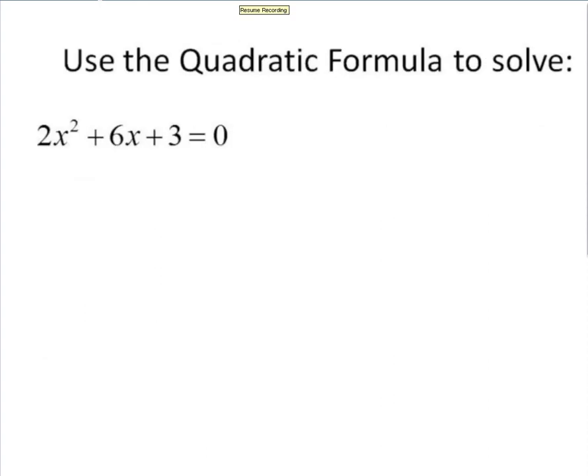If we're going to use the quadratic formula to solve this equation, the first thing that we have to make sure of is that we've got everything to one side. We've got our ax squared plus bx plus c equal to zero.